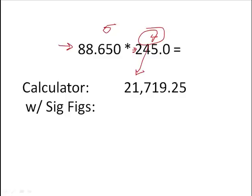We can't have one, two, three, four, five, six, seven bits of information when we only measured a max of four over here. So we have to keep the four highest places. One, two, three, four. So we're going to write 21,700, and then this is the last official number we're going to keep. The rest are going to become zeros.